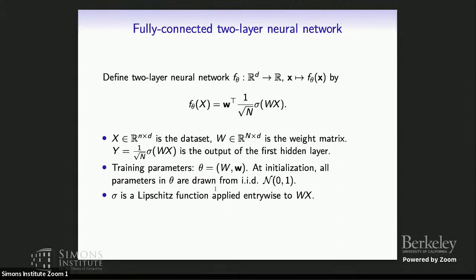We're interested in this fully connected two-layer neural network model, where we have a parameter theta and the function F that takes a vector X to a value F_theta(X), given by the two-layer network. X is a dataset with dimension n by d, so every vector is of dimension d and we have n vectors, and W is the weight matrix that keeps track of the weight on every edge. After you pass the first layer, you get another matrix Y, which is the output of the first hidden layer. The training parameters are given by theta, which is the weight matrix W and the output layer little w.